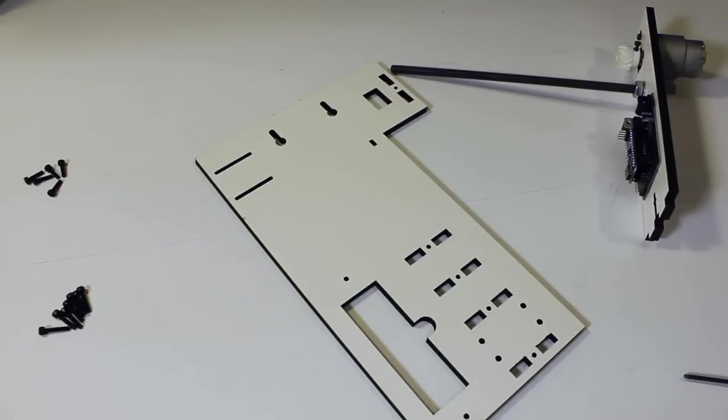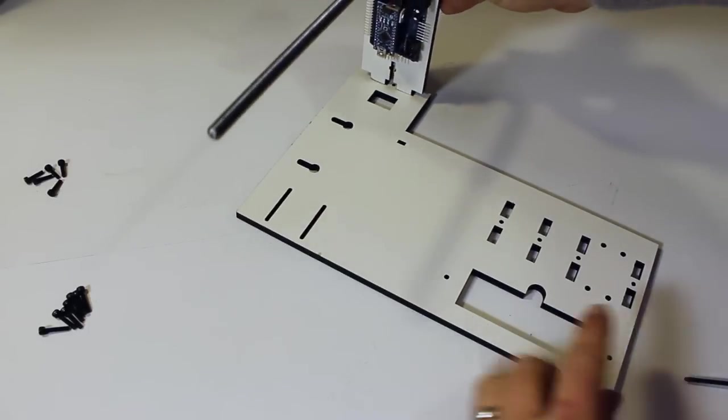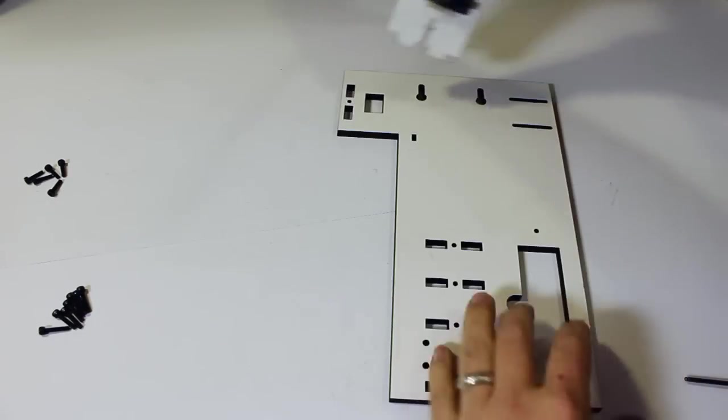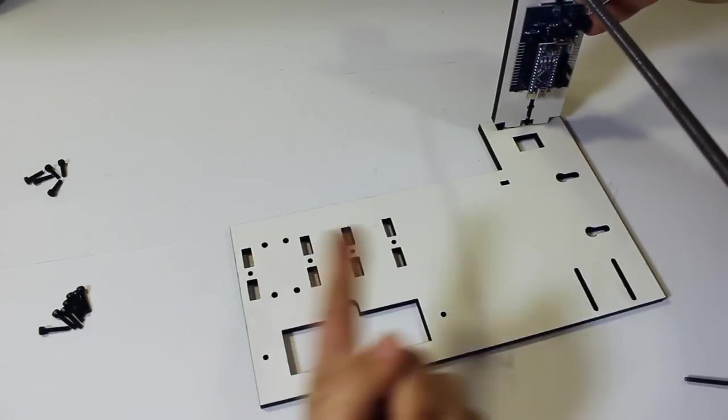At this point, you need to decide which way you want the winder to face. You can set it this way and have the filament come in from right to left, or you can turn the base over and have the filament come in from left to right.